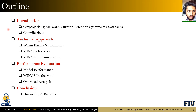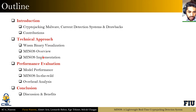We'll start off with the introduction, where I give some background information about cryptojacking malware, current detection systems, and drawbacks, followed by our contributions. This will be followed by the technical approach, where we go over our framework and its implementation, then the evaluation of our framework and the overhead analysis, and finally we will conclude with the conclusion.